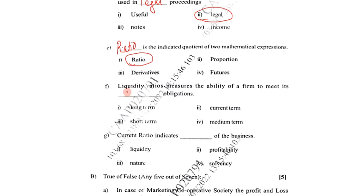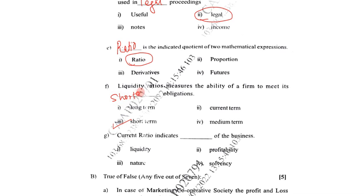Next: Liquidity ratio measures the ability of a firm to meet its dash obligations. Options are long term, current term, short term, or medium term. The correct answer is short term — liquidity ratio measures the ability of a firm to meet its short term obligations.